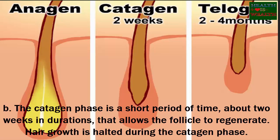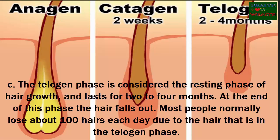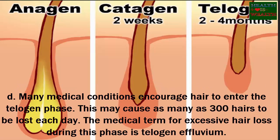C) The telogen phase is considered the resting phase of hair growth and lasts for two to four months. At the end of this phase the hair falls out. Most people normally lose about 100 hairs each day due to hair that is in the telogen phase. D) Many medical conditions encourage hair to enter the telogen phase prematurely.